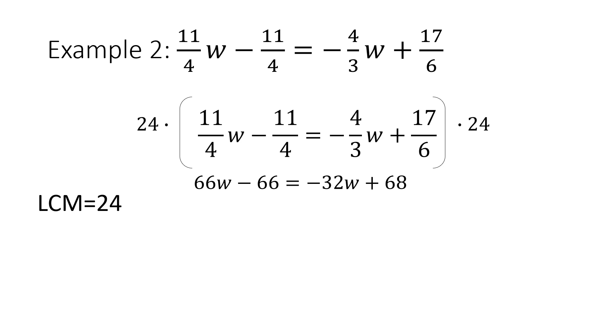When I get to this step, I like to move my variable first, starting with my smaller variable. Here, my smaller variable is -32W. Since it's negative, I'm going to add 32W to both sides of my equation.